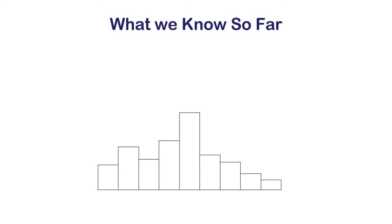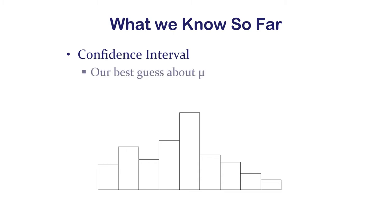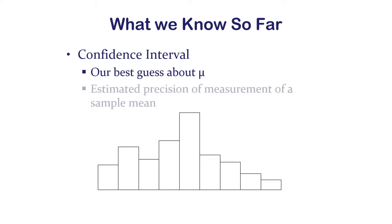What we know so far is that we calculate a confidence interval from a sample — that little histogram is to show you this is a sample, not a population. That confidence interval tells us our best guess about where mu might be. Mu is the true population mean of the population this sample came from, and it's also our estimated precision of measurement of our sample mean.